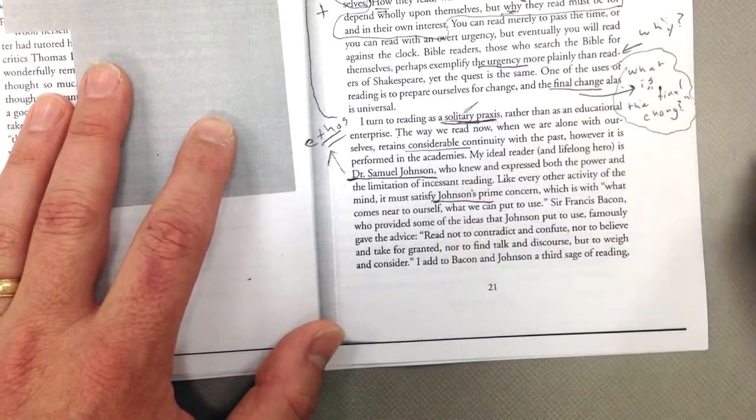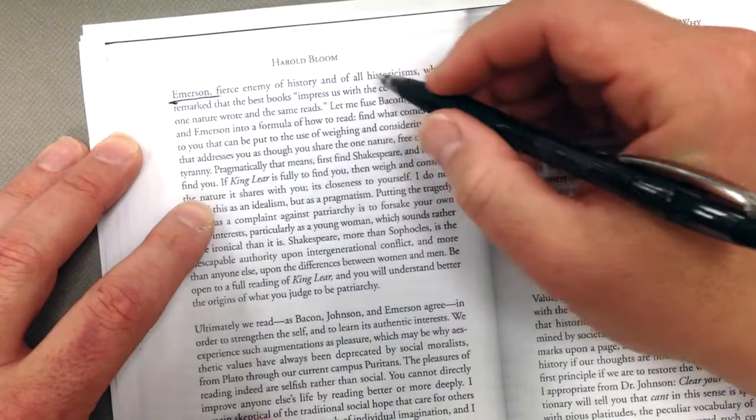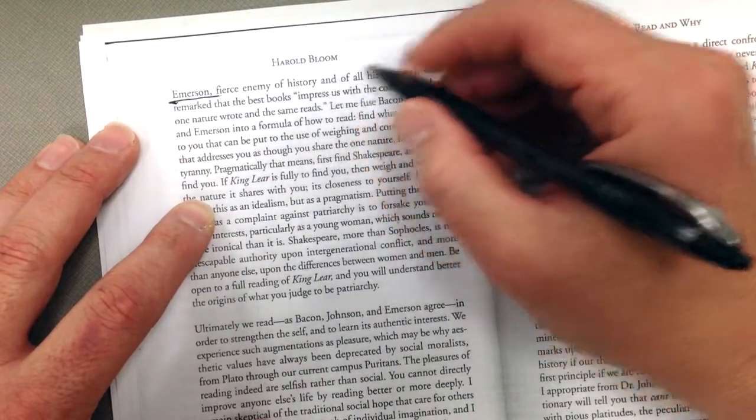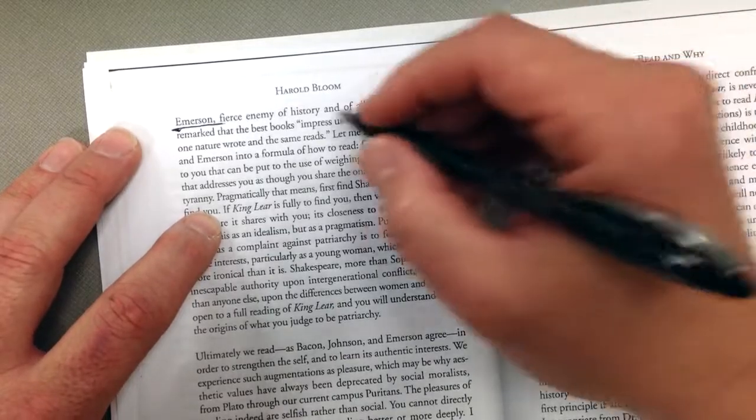He's got Johnson. He talks about Bacon. He talks about my main man, Emerson, on the next page, which I'm going to flip over to right now. He talks about Emerson right here. So you want to underline these guys. You don't know what historicism is, but that's okay. The enemy of history.